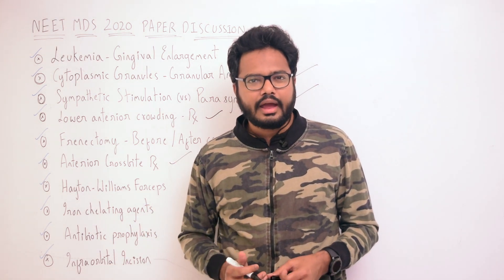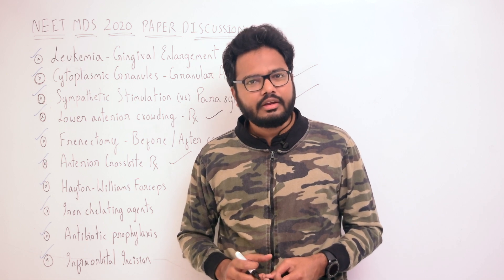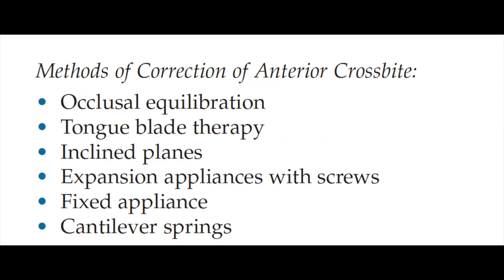Moving on to anterior crossbite treatment. Different methods to correct anterior crossbite include tongue blade therapy, occlusal equilibration, inclined planes, expansion appliances with screws, fixed appliances, and cantilever springs.